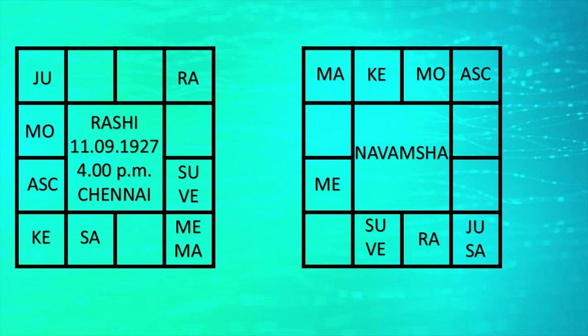Now let us come to the tenth house. The tenth house lord is Venus and it resides in the eighth house to the ascendant. However, to compensate, Venus is aspected by the moon which has good light energy, and there is no connection between Mars and Saturn in the tenth house. Though the tenth house lord resides in the eighth house, it receives the light energy of the moon heading closely towards full moon, with no malefic connection from Saturn or Mars. This is why he had a persistent profession till 65 or 70 years of age.